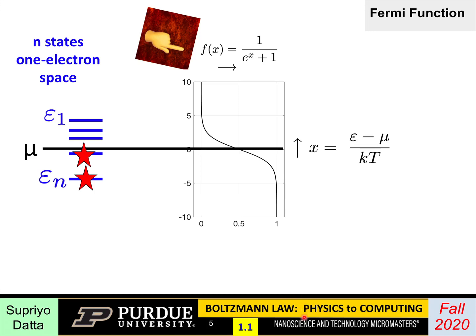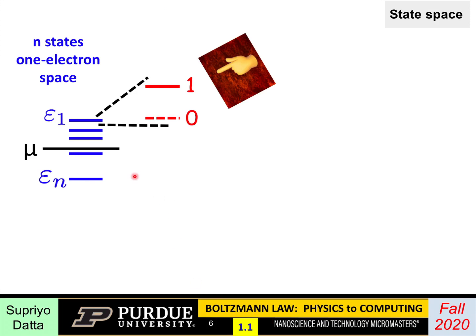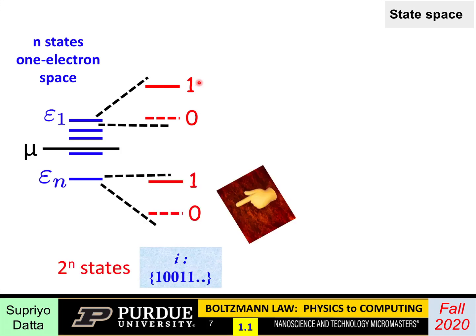In order to explain Boltzmann's law I need to introduce the concept of state space, which is a very important concept throughout this course. If you have a bunch of levels — what you might call the one-electron levels — each one of those levels can be in one of two possible states: it can be either full or empty, the zero state or the one state.